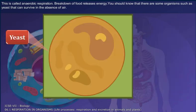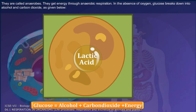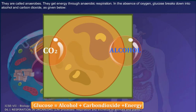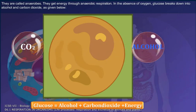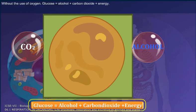There are some organisms, such as yeast, that can survive in the absence of air. They are called anaerobes. They get energy through anaerobic respiration. In the absence of oxygen, glucose breaks down into alcohol and carbon dioxide, as given below: glucose → alcohol + carbon dioxide + energy.